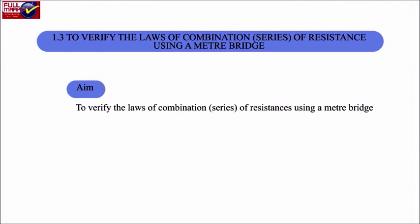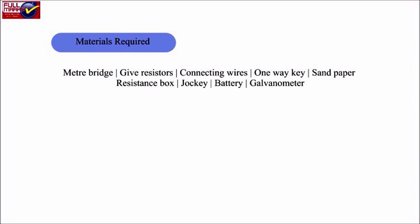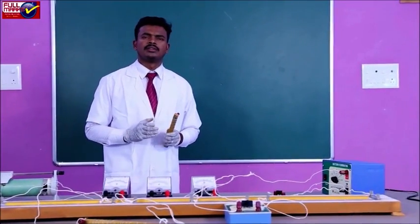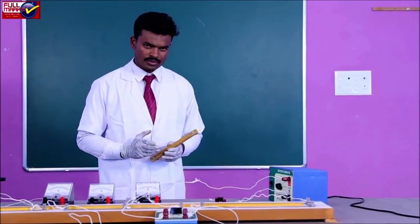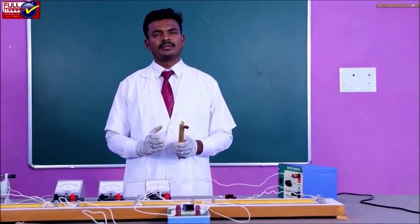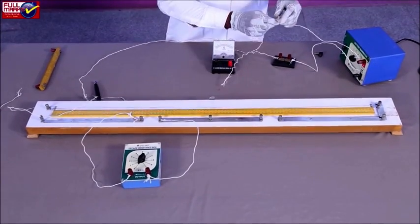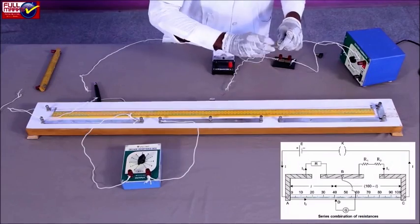Experiment 1.3: To verify the laws of combination — series — of resistance using a meter bridge. Materials required: meter bridge, given resistors, connecting wires, one-way key, sandpaper, resistance box, jockey, battery, and a galvanometer. Resistances are said to be in series if they are connected end to end; the equivalent resistance of a series combination is more than the individual resistance. Set up the apparatus by drawing a circuit diagram as shown.